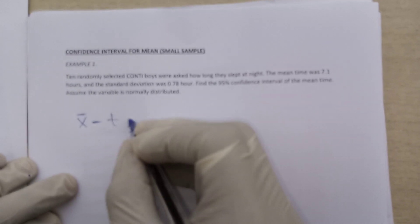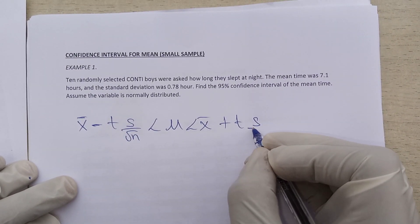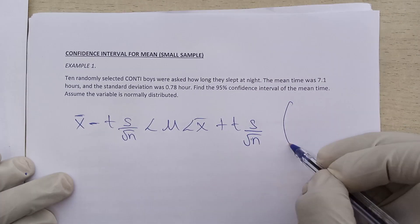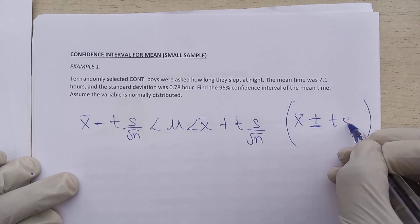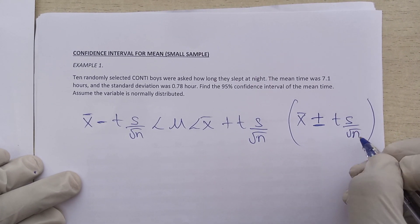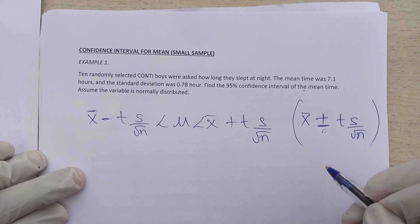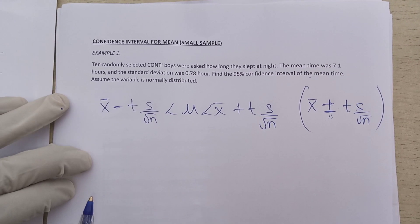The formula is: sample mean minus T times (standard deviation divided by root N) less than mu less than sample mean plus T times (sample standard deviation divided by root N). You can also write it as: sample mean plus or minus T times (standard deviation over root N). Both forms are equivalent, but since there is a plus or minus, you have to work them out separately. I will use the expanded form in this example.